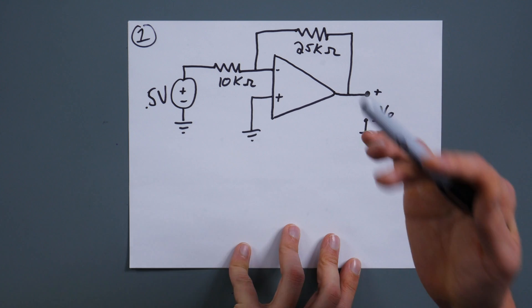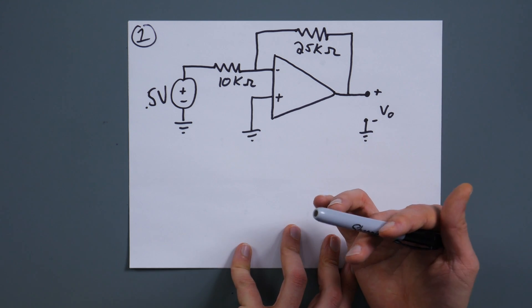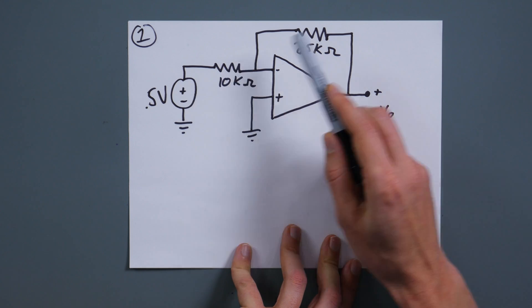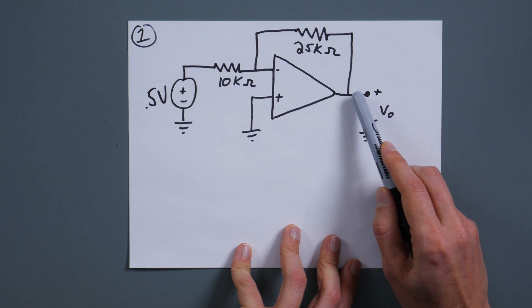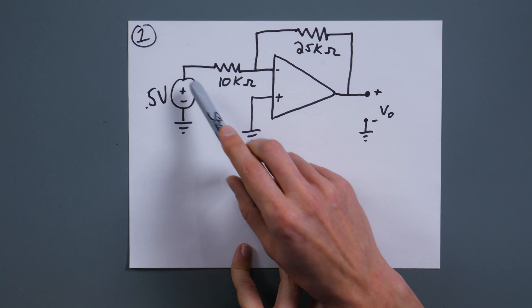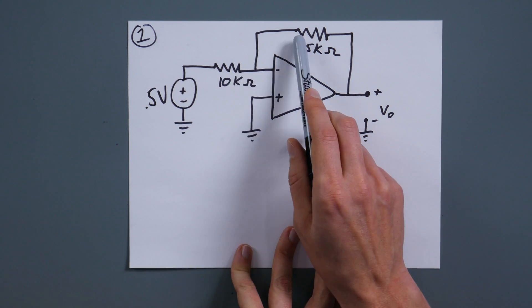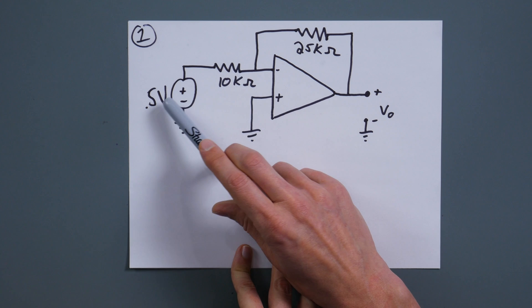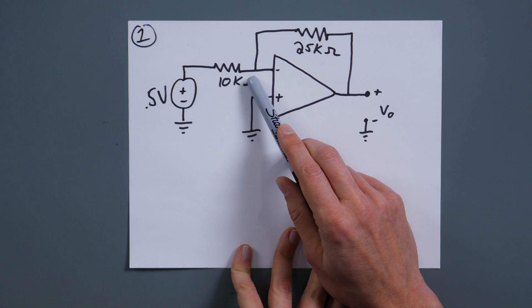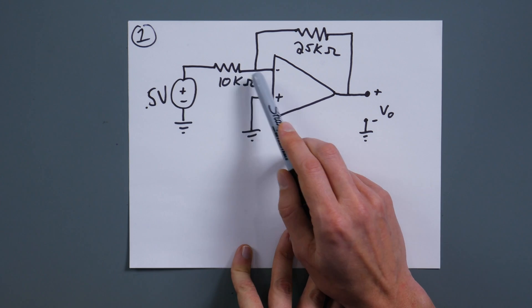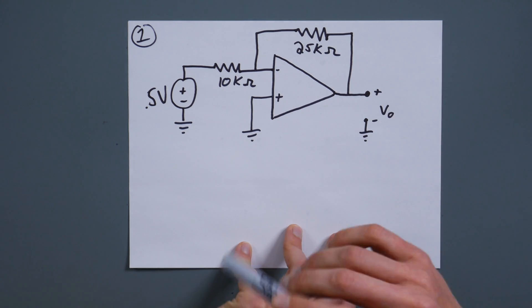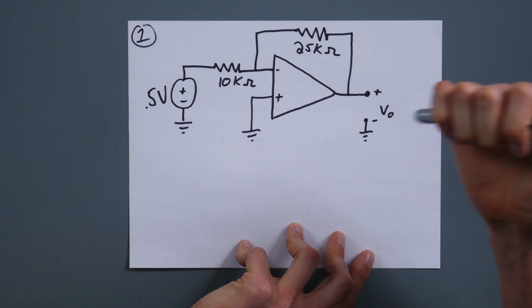Now once we know that, this immediately simplifies a huge amount, because we have this voltage, this resistance, this resistance, and then this voltage. And we know that no current goes in here. So the current through this resistor is the same as this resistor. And since we know the current through this resistor, because it's 0.5 volts minus zero over 10k, then we know what this voltage is going to be. Just did that at a very high level. Let's actually work through it.